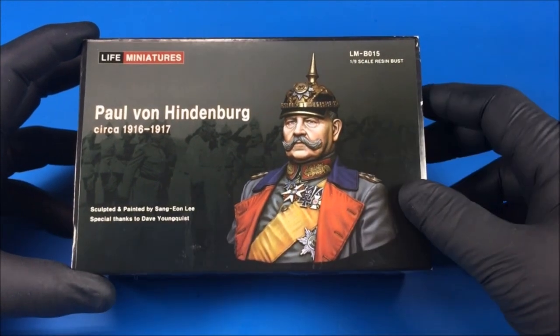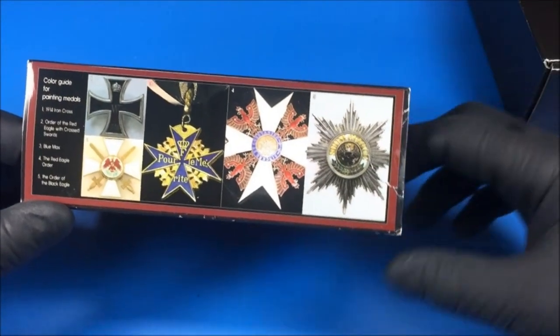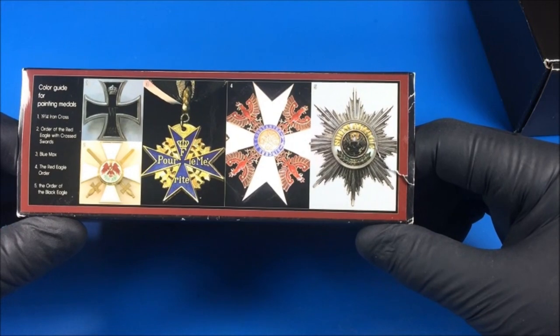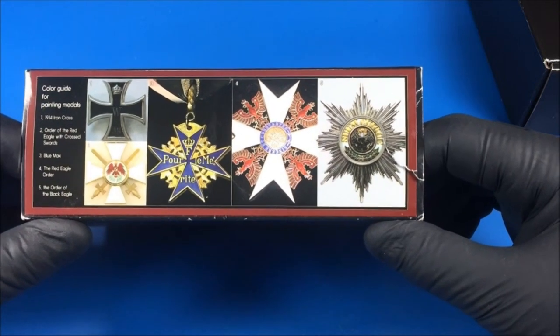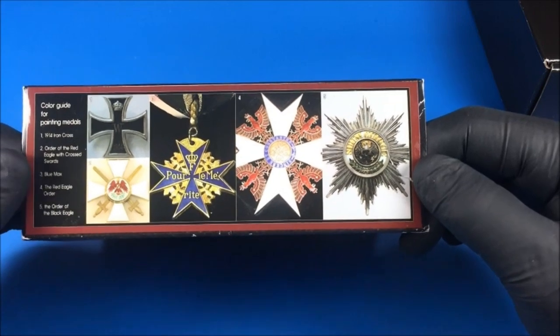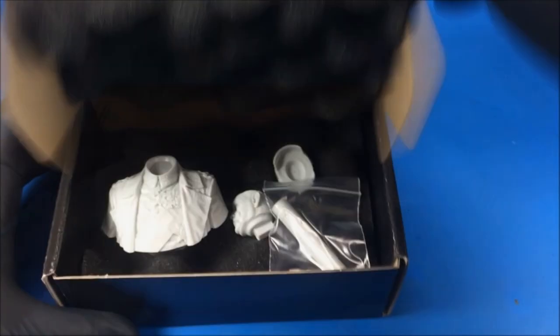All right, let's take a look inside the box. So one thing I wanted to show you before we get into the inside of the box, they give you a nice color guide for painting the metals on the side here. I thought that was kind of a nice bonus. Let me tell you what each of the metals actually is called. That's one last thing you have to do to research the figure.